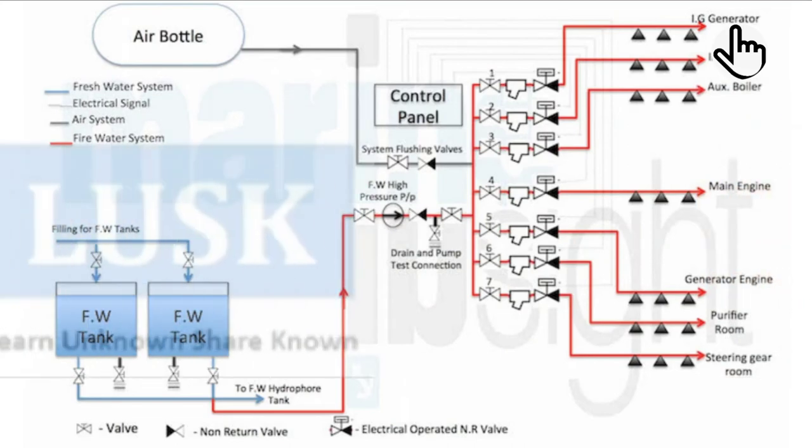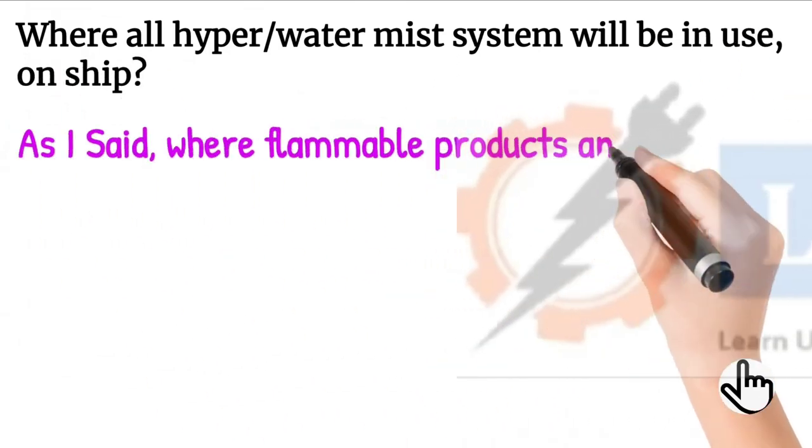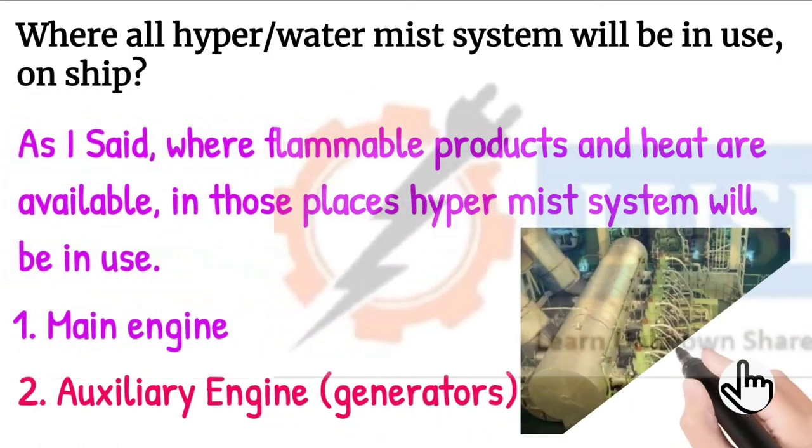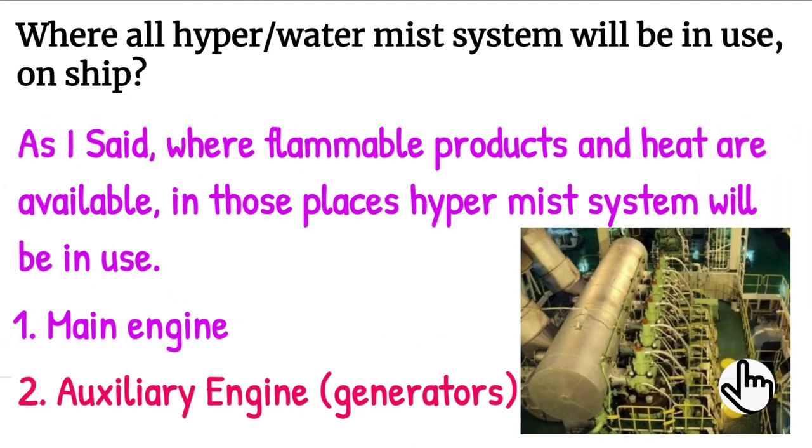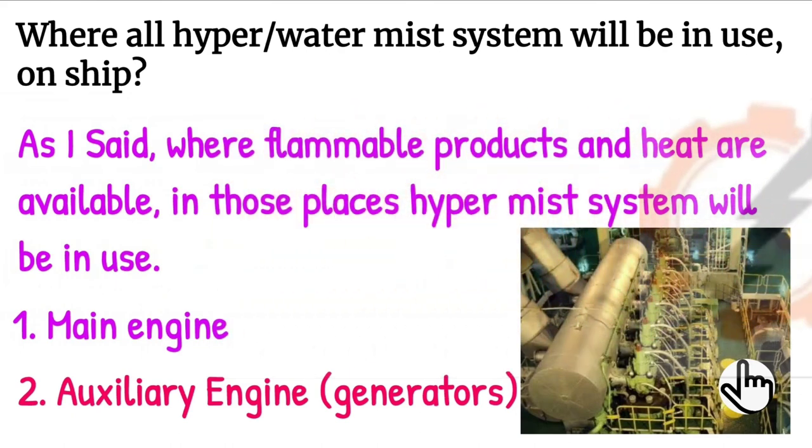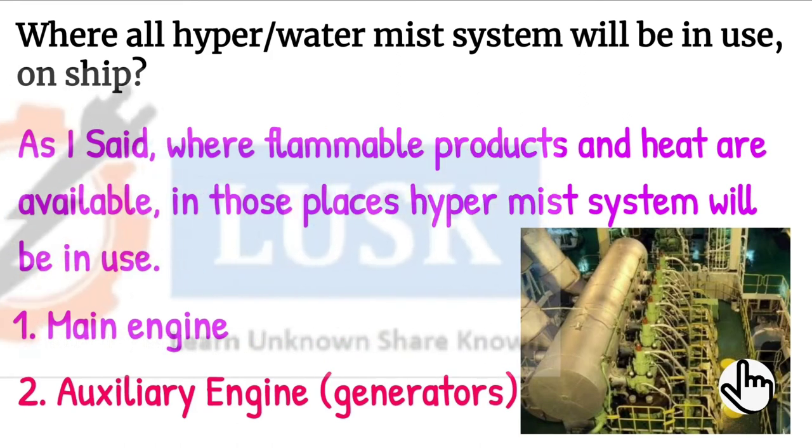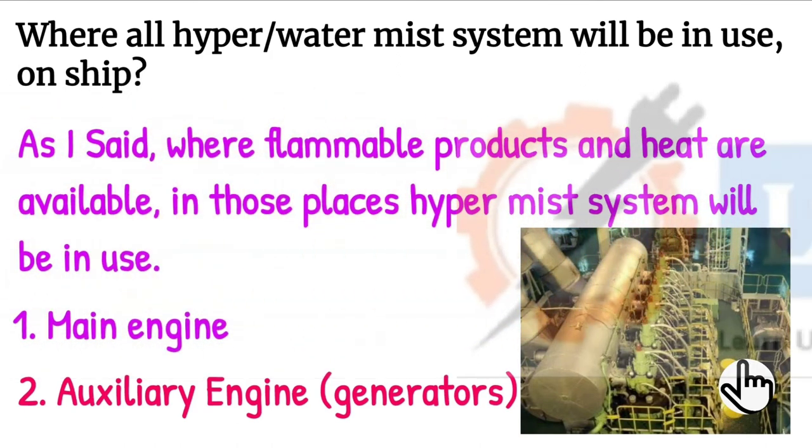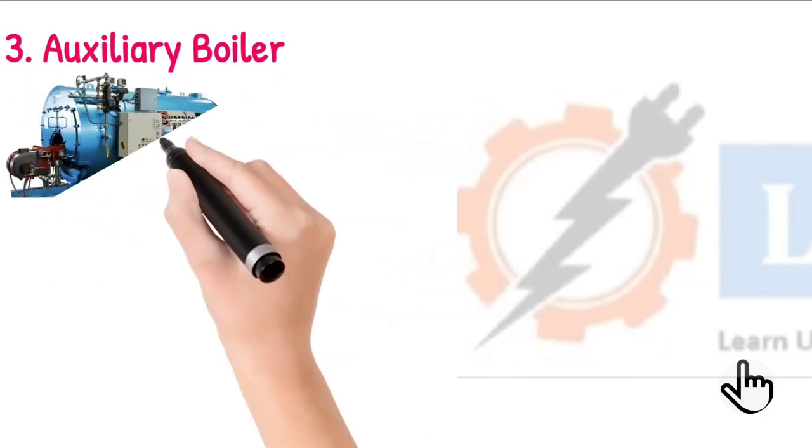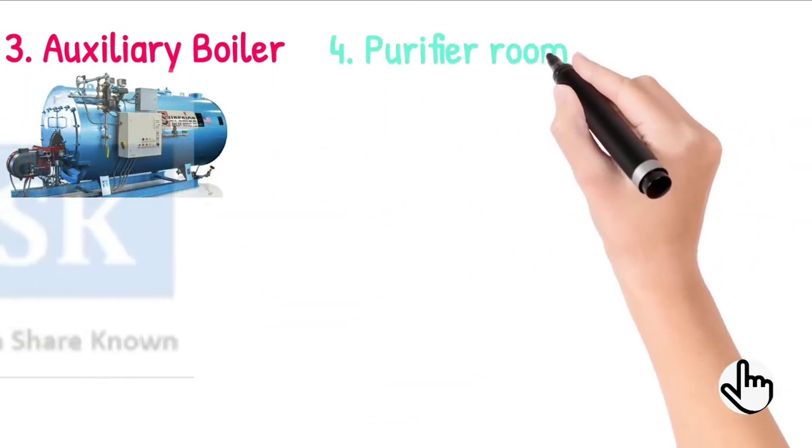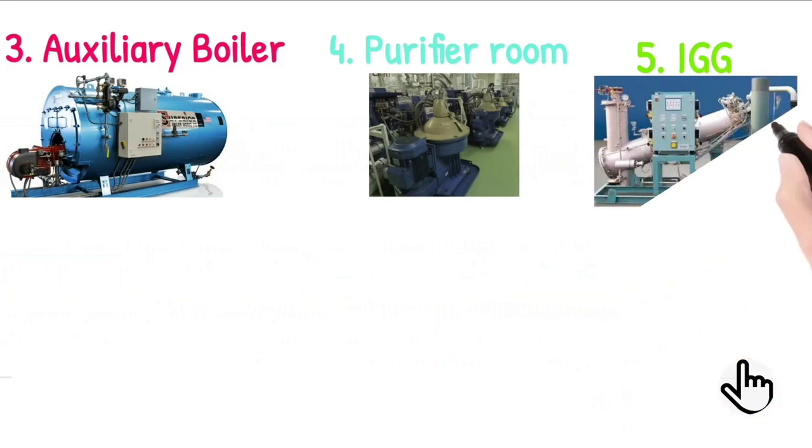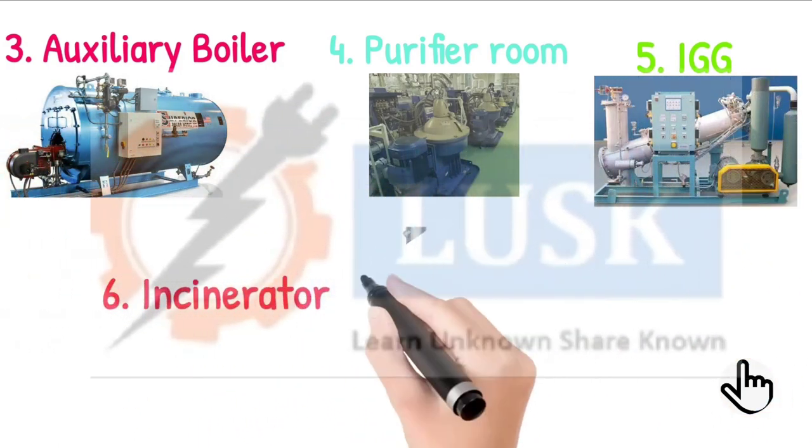Where all will hypermist system be in use? As I said before, where flammable products and heat are available, watermist system will be in use. In main engine, hot surface and chances of fuel or oil leakage is highly possible, so we will have watermist system. Same as auxiliary engines, we have watermist system. Boilers also have hot surface and chance of leakage of oil, so we have watermist system in boiler. Same as purifier room, and IGG, which is nothing but inert gas generator.